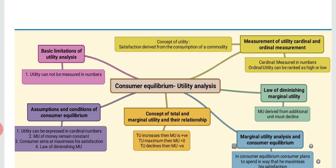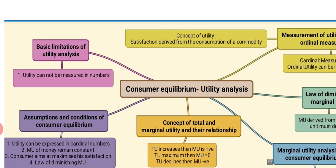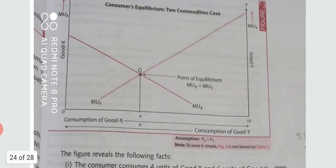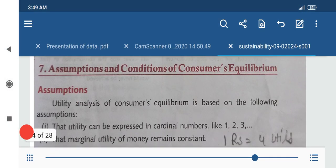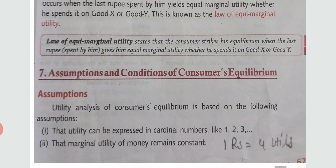The last two topics are: basic limitations of utility analysis, and assumptions and conditions of consumer equilibrium. We will start with the assumptions and conditions of consumer equilibrium. Assumptions mean the conditions under which this law applies. The first assumption is that utility can be expressed in cardinal numbers like one, two, three — a concept given by Marshall.